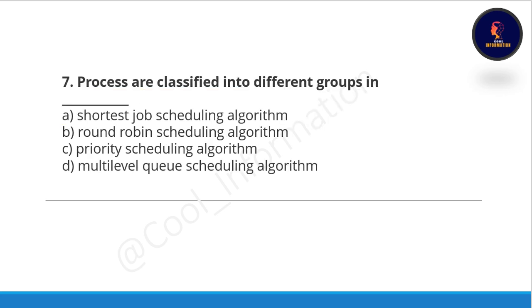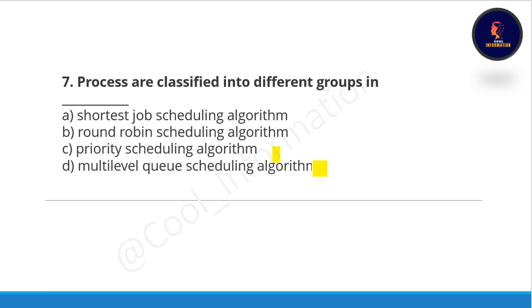Question seven: processes are classified into different groups in which scheduling algorithm? Option A: shortest job scheduling algorithm, option B: round robin scheduling algorithm, option C: priority scheduling algorithm, or option D: multi-level queue scheduling algorithm. If you know the answer please comment below. The correct option is option D, multi-level queue scheduling algorithm.